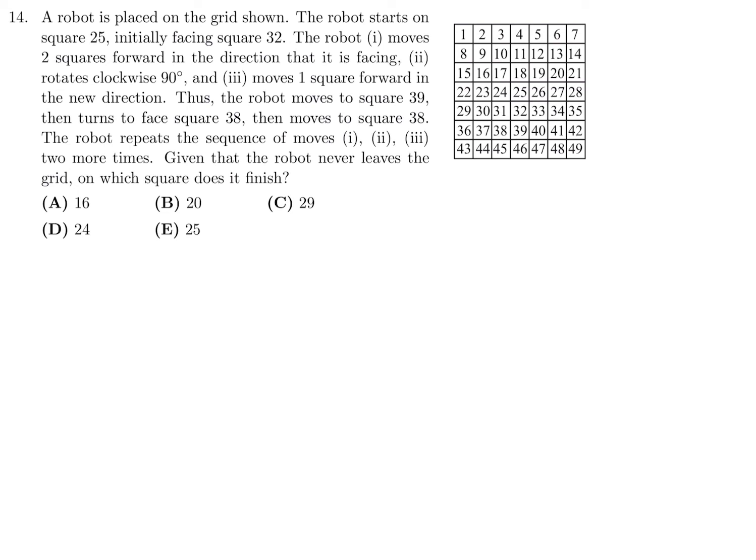Given that the robot never leaves the grid, on which square does it finish? We ended up at 38. From that, let's go through one, two, three. One is going forward 2, so one, two. Then you have to turn 90 degrees clockwise, so now we're going to be facing upwards. As you're facing upwards, move one square. So we're going to move to 29.